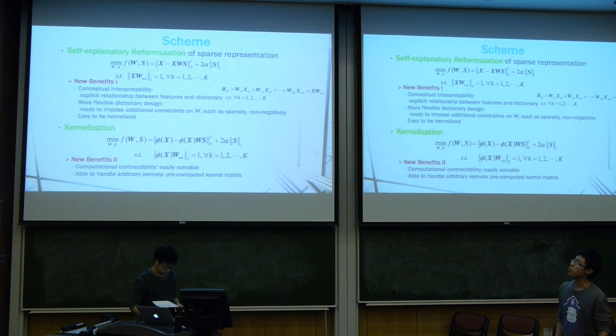So to handle this problem we first try to introduce a self-explanatory reformulation of sparse representation where the basis vectors are replaced with the linear combination of the input features. Now we have some new benefits. First, as we said, self-explanatory, this is conceptually interpretable which means it gives explicit relationship between the learned dictionary and the features.